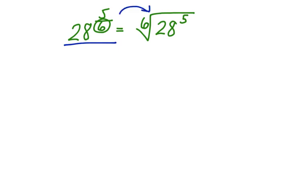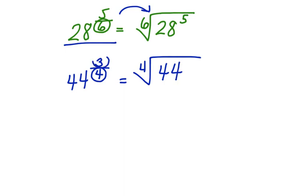Let's take a look at another one like that. Let's say I have 44 to the 3 fourths power, and I want to write it in radical notation. This 4 tells me I'm going to be looking for the fourth root. I start off like that. The fourth root of what? The fourth root of 44 to the 3rd power.